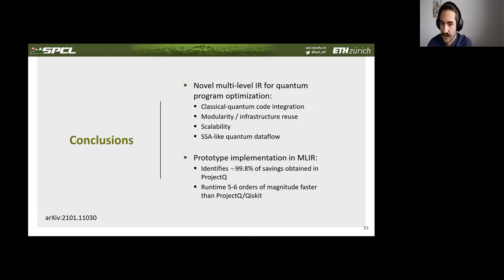So in conclusion, we designed a novel intermediate quantum representation for program optimization, which focuses on classical quantum code integration, reusing existing compilation infrastructure, and scalability for application scale quantum programs. It does so by exposing the quantum data flow alongside the classical data flow in the same IR and enabling static optimization on these programs. The results of our benchmark show that 99.8% of savings obtained in Project Q can also be obtained statically in KIRO while being much, much faster.